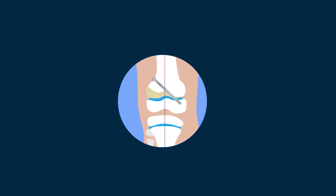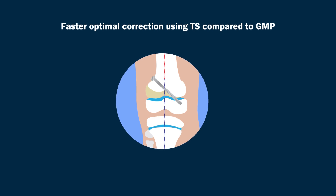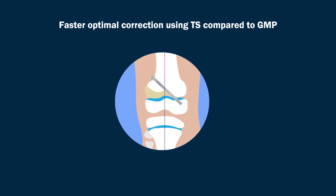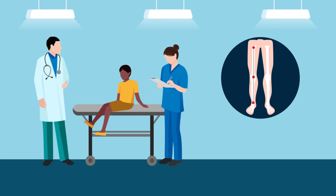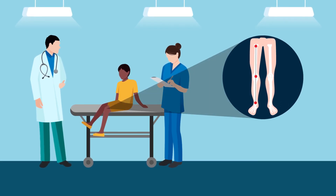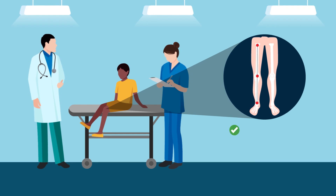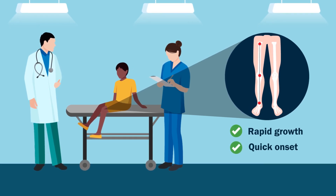These findings demonstrate that TS may facilitate faster optimal correction of knee deformities during distal femoral guided growth when compared with GMP during the initial months of treatment. TS may especially be advantageous for skeletally immature patients who will soon reach maturity, as rapid growth with a quick onset is required.